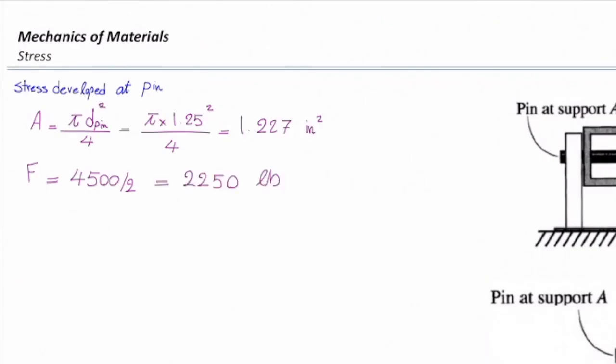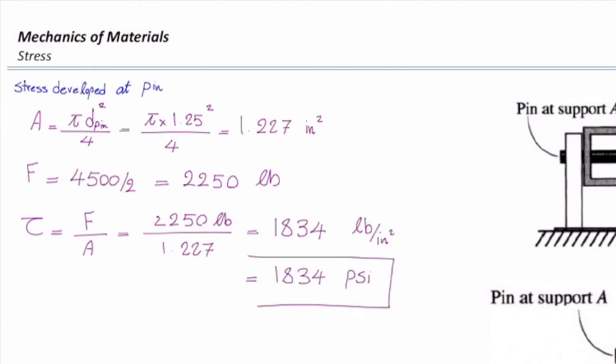So the force is 2,250 pounds. The reaction force is 4,500. The force itself that passes through the pin from each cross section area is half of that. I say simply, stress is force over area, plug the values, and that gives me 1834 pounds over squared inch, which is psi.